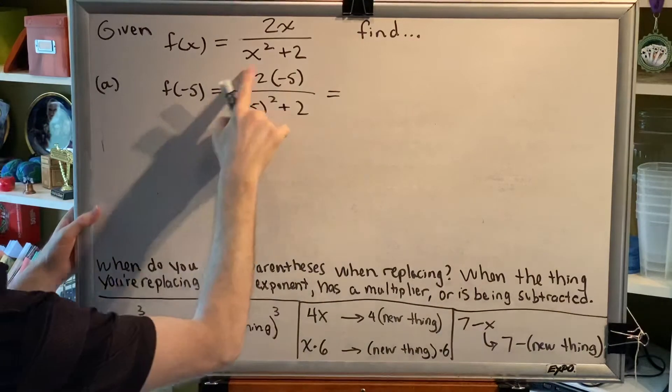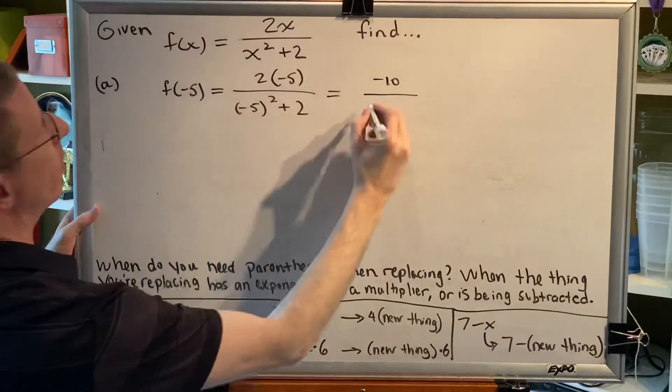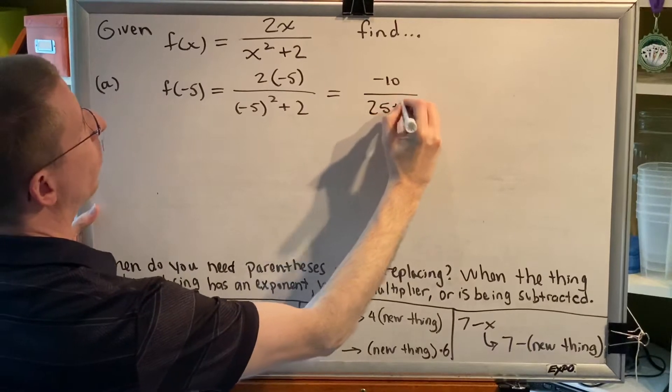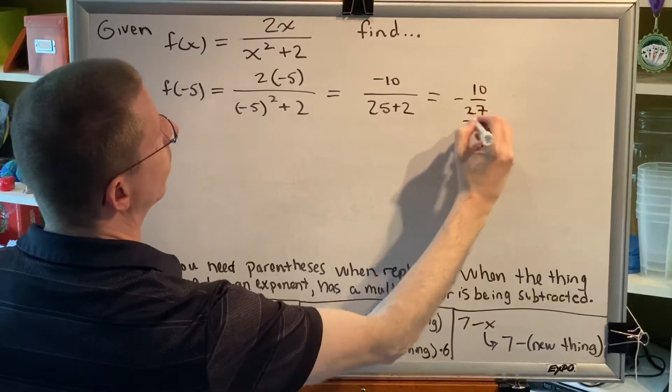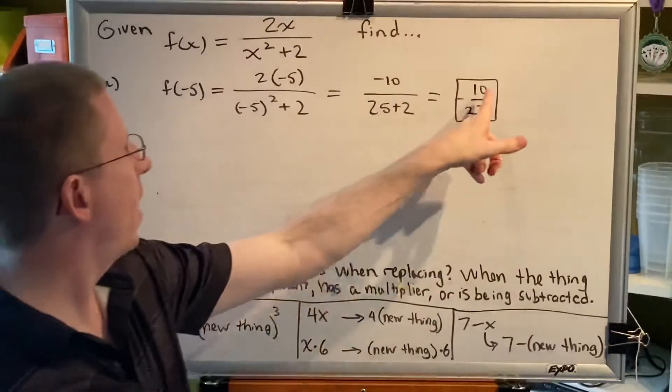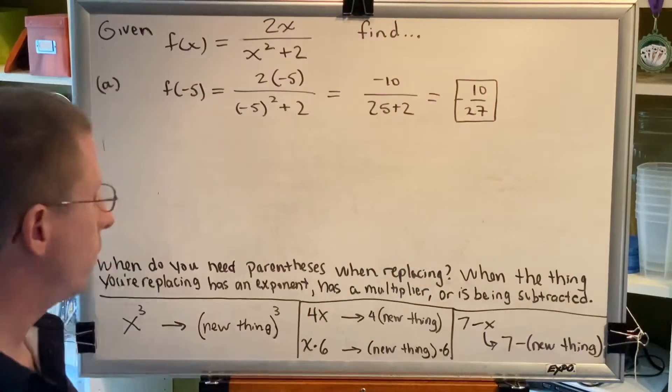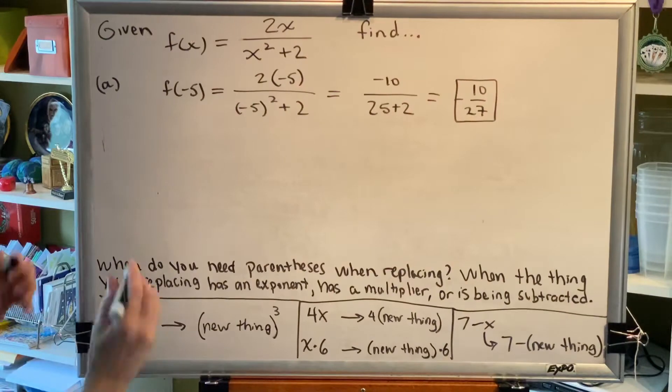So 2 times negative 5 is negative 10. Negative 5 squared is 25, and then plus 2, we get negative 10 over 27. This cannot be reduced because the factors of 10 are 2 and 5, and the factors of 27 are 3 and 3 and 3. There's no common factor.